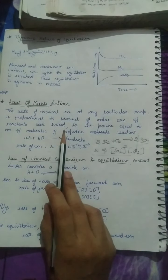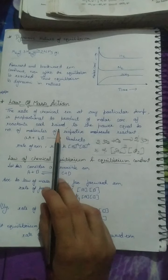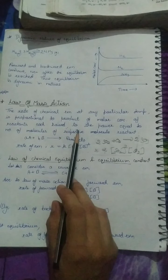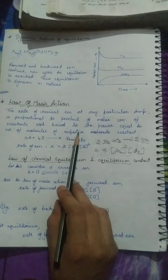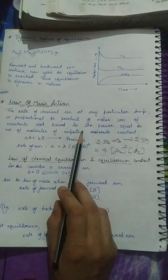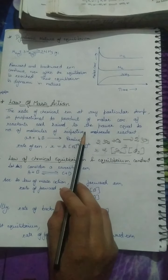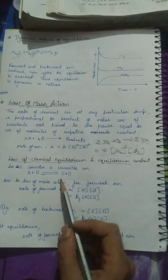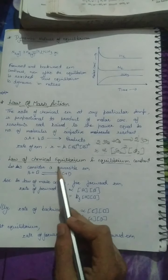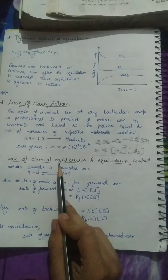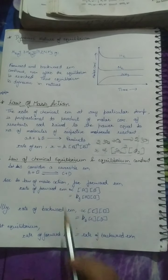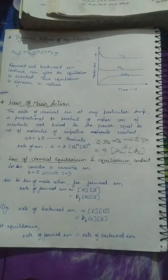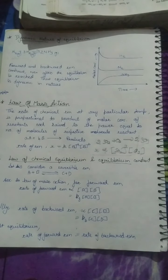By using the law of mass action, we have another law called the law of chemical equilibrium, and from it we derive a constant called the equilibrium constant.